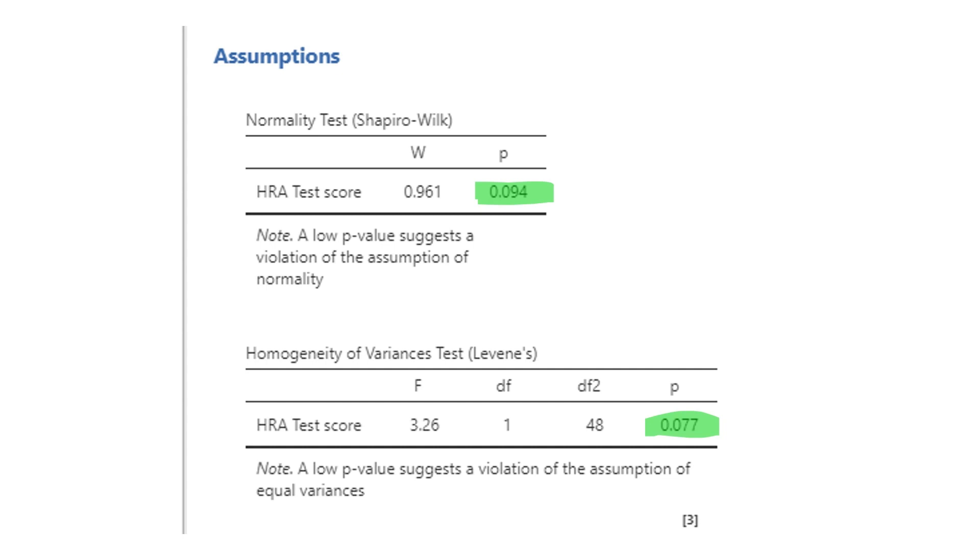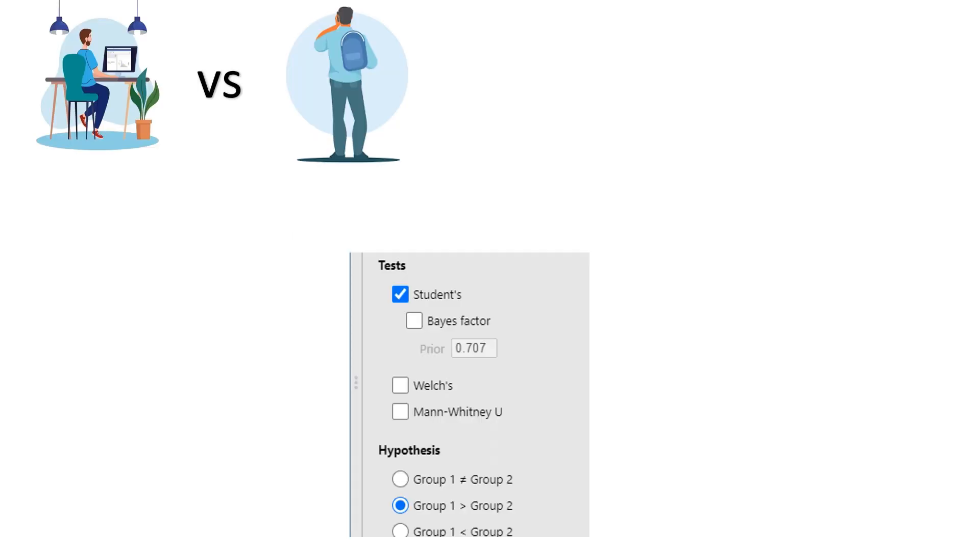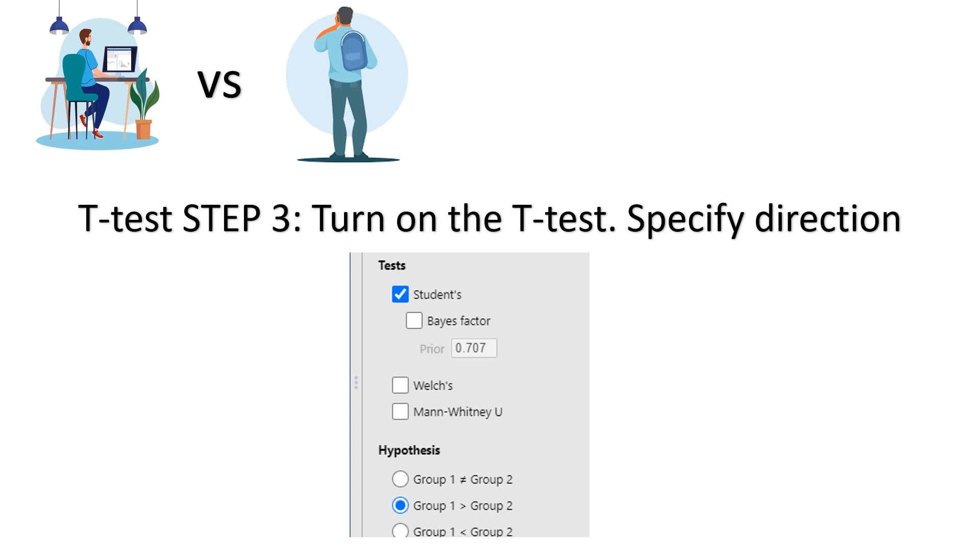In this case, we can see that both of our p-values are above 0.05, meaning that these tests are not significant. That is good. That is what we want. We can move forward with no issues. Step three, turn on the t-test and specify whether the test is one-sided or two-sided. This again loops back to our hypotheses.